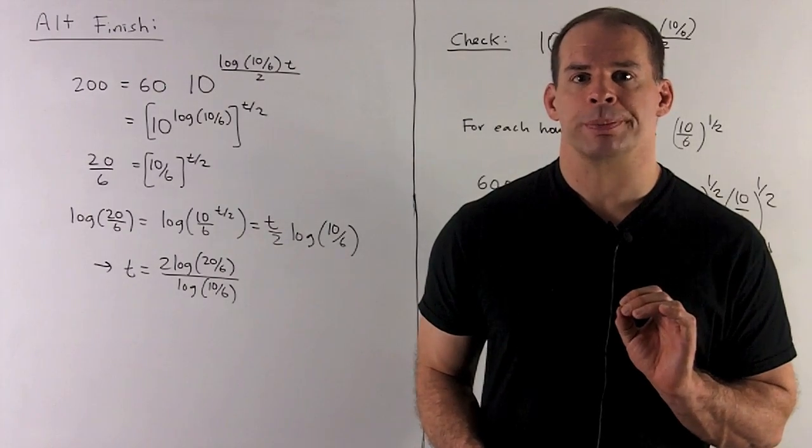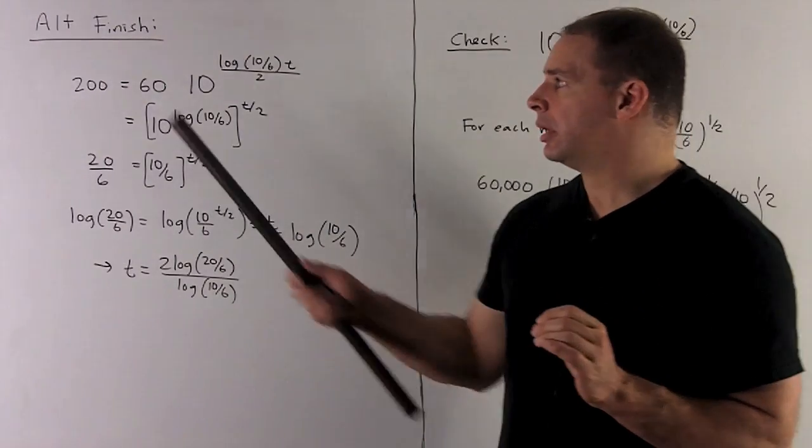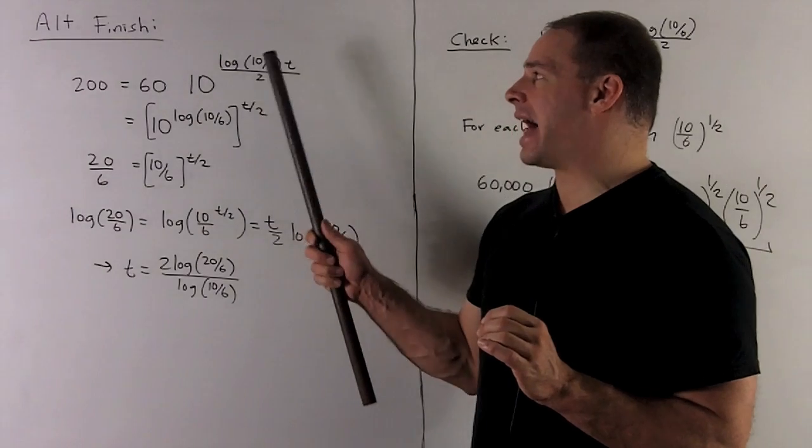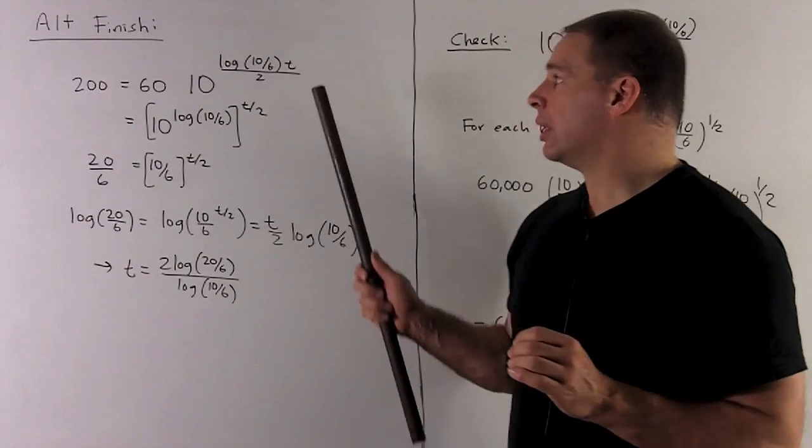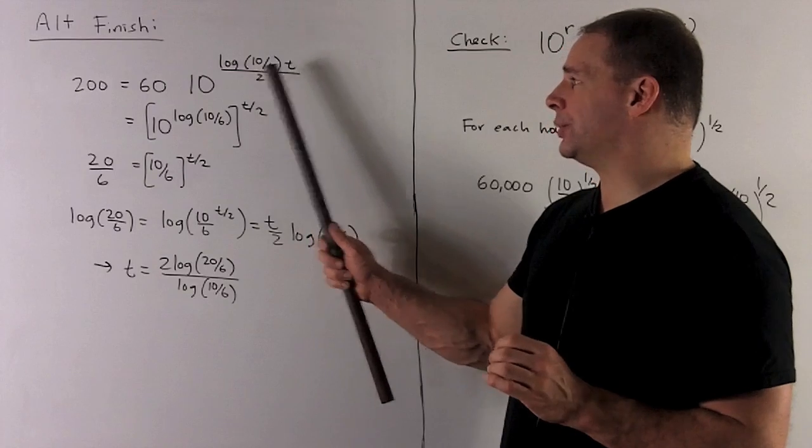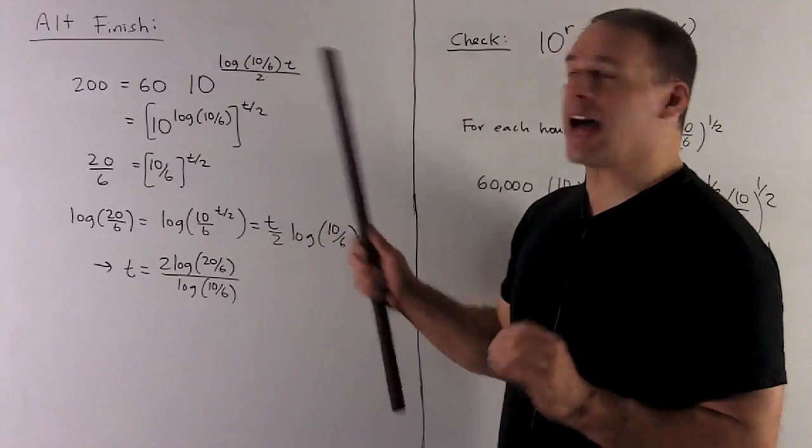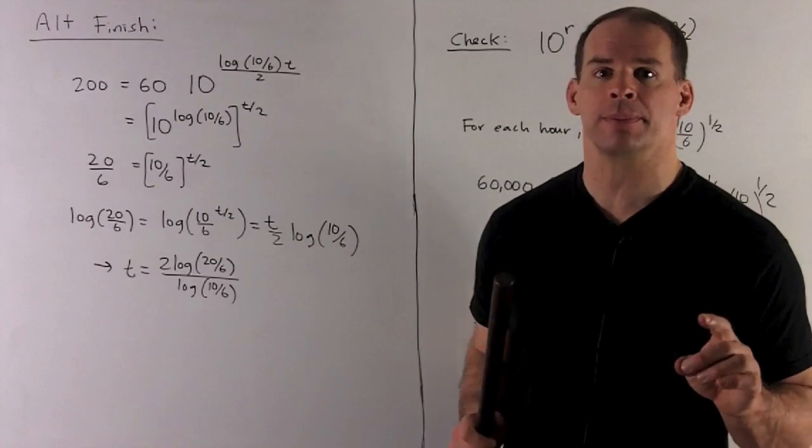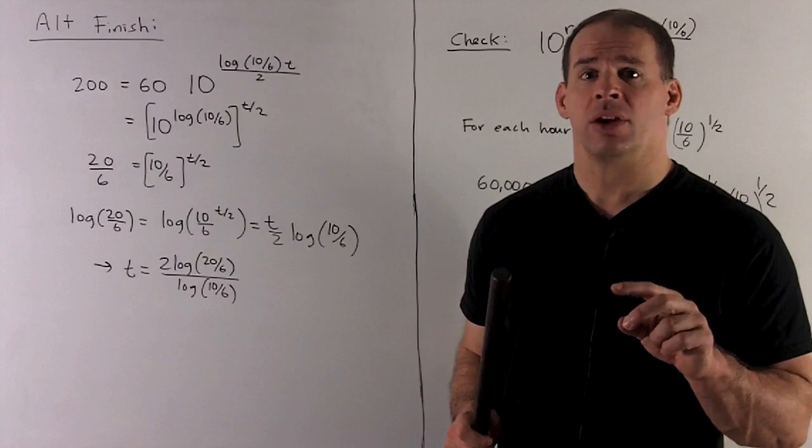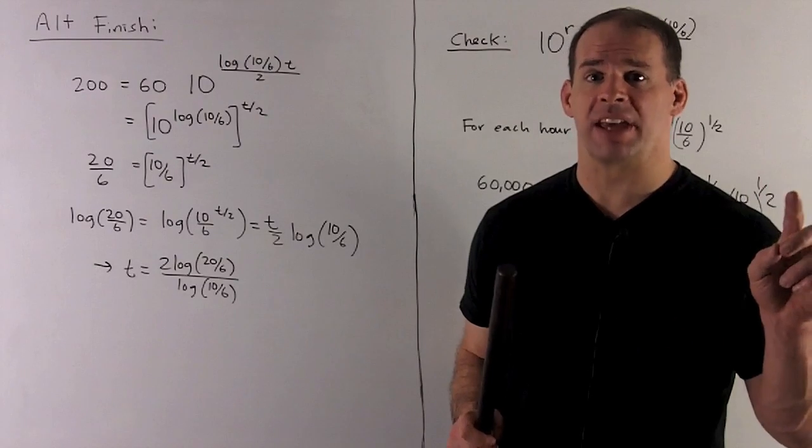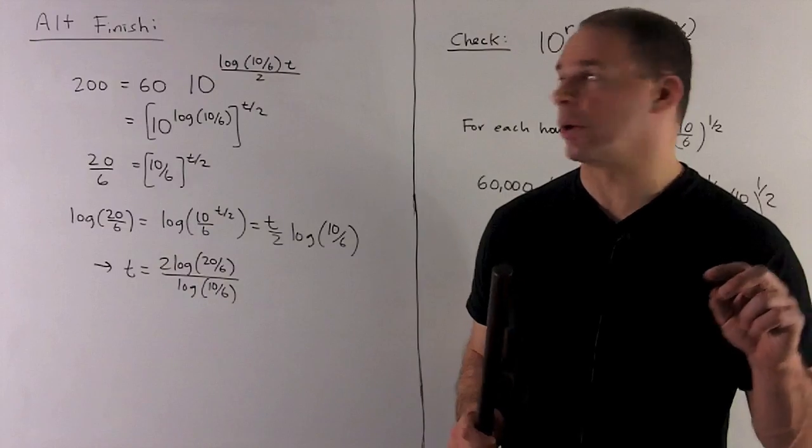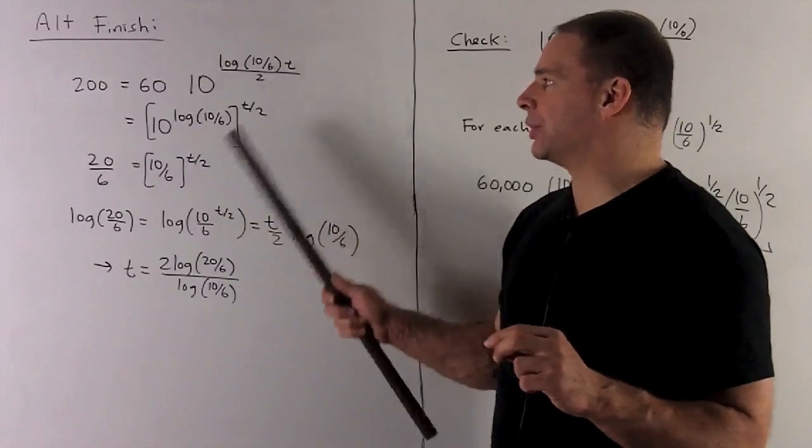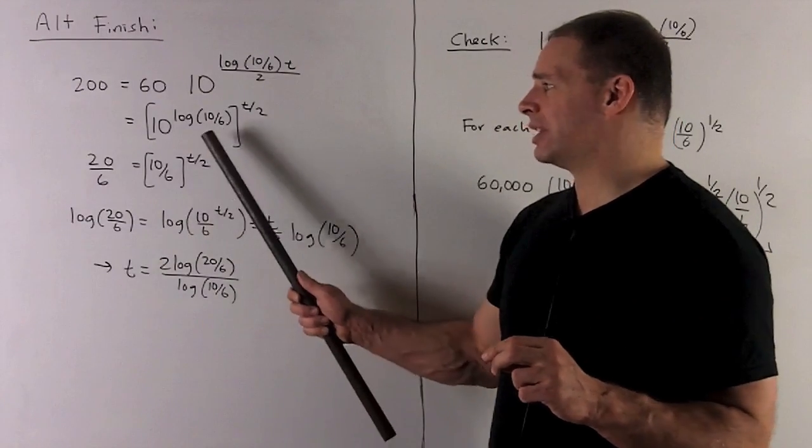Here's a different way to finish. So when I'm at the step 200 equals 60 times 10 to the log 10 over 6, t over 2, what I want to do instead is pull the t over 2 to the outside and leave 10 log 10 over 6 in parentheses. If I have 10 raised to the log, and that's base 10, the 10 and the log base 10 are going to cancel and just leave the exponent. So this is going to collapse to 10 over 6 to the t over 2.